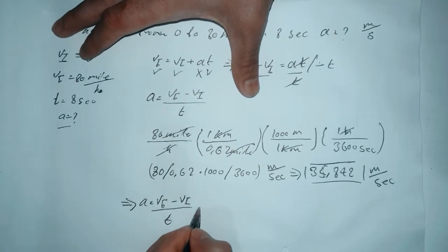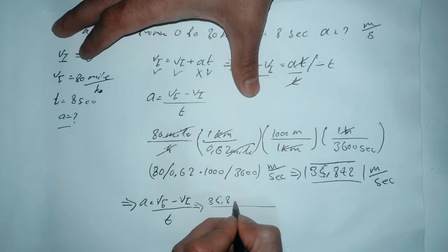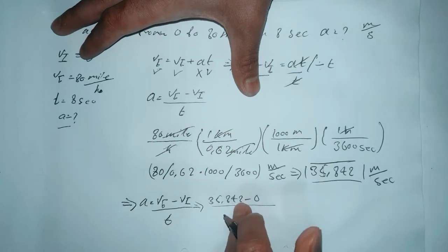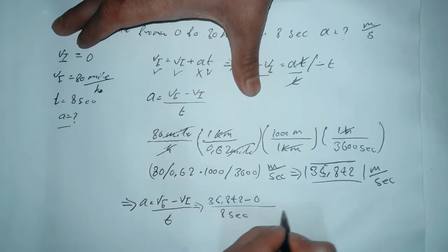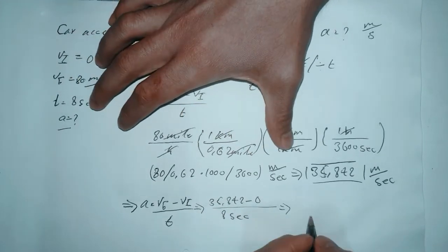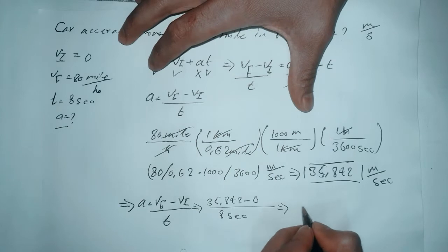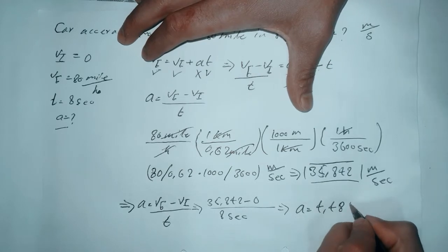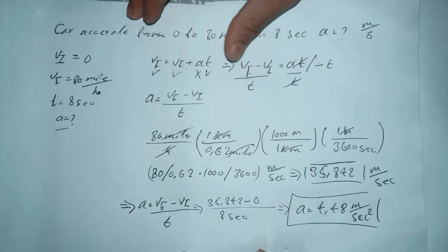Our final velocity is 35.842, minus the initial velocity which is zero, divided by t which is 8 seconds. When we divide that, we get the acceleration equal to 4.48 meters per second squared. This is our final answer.